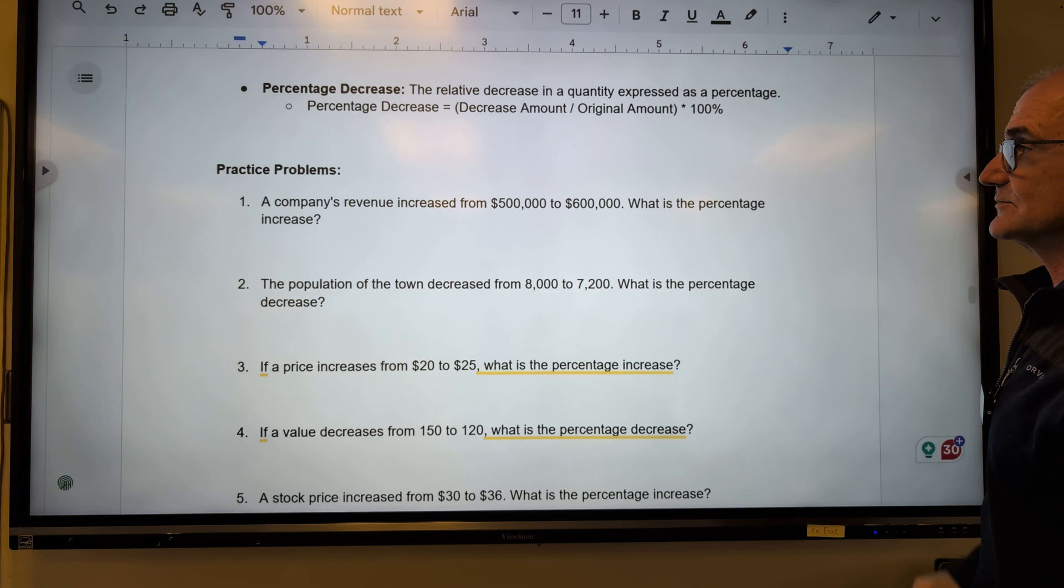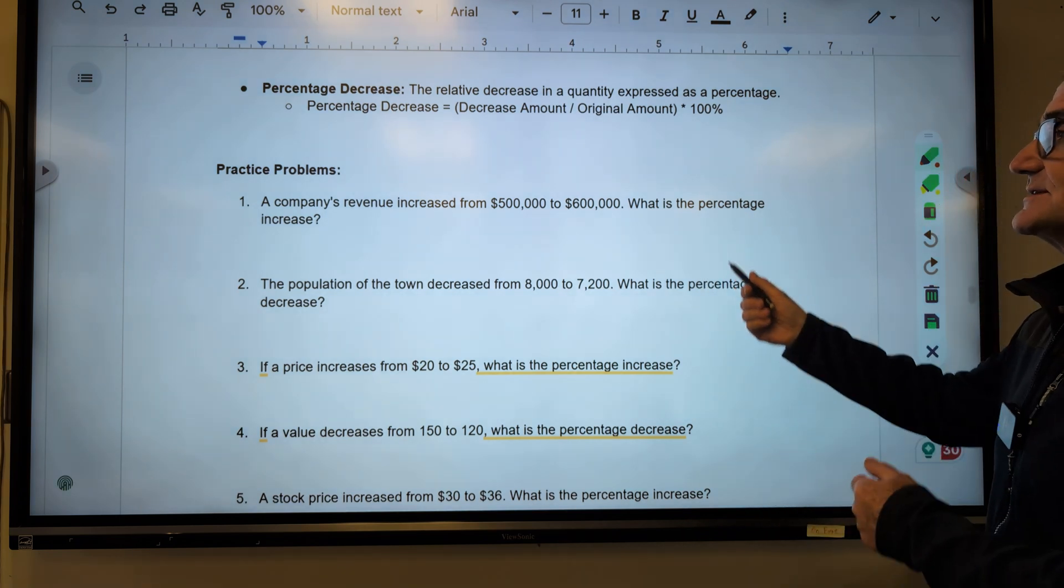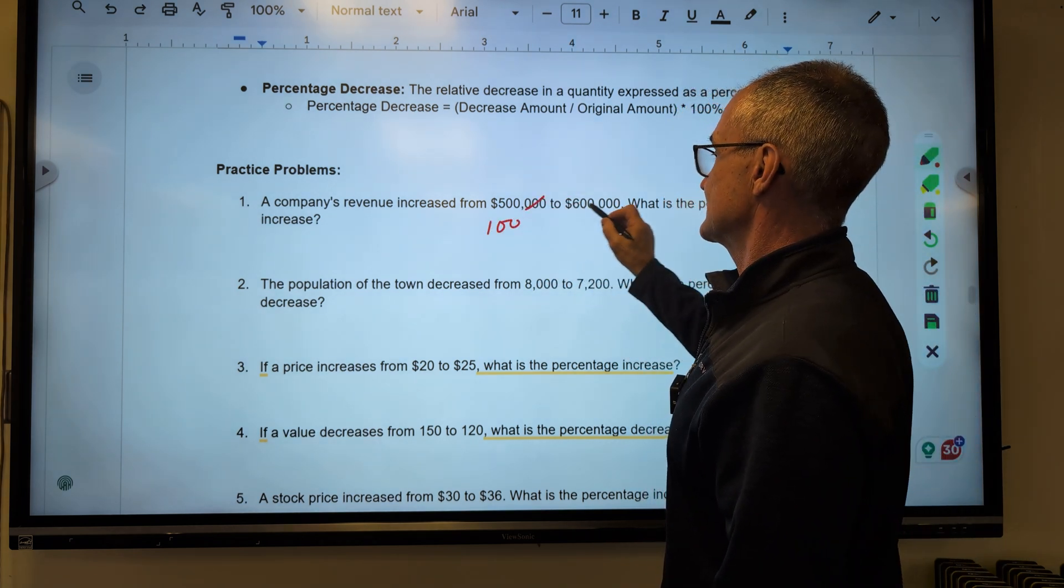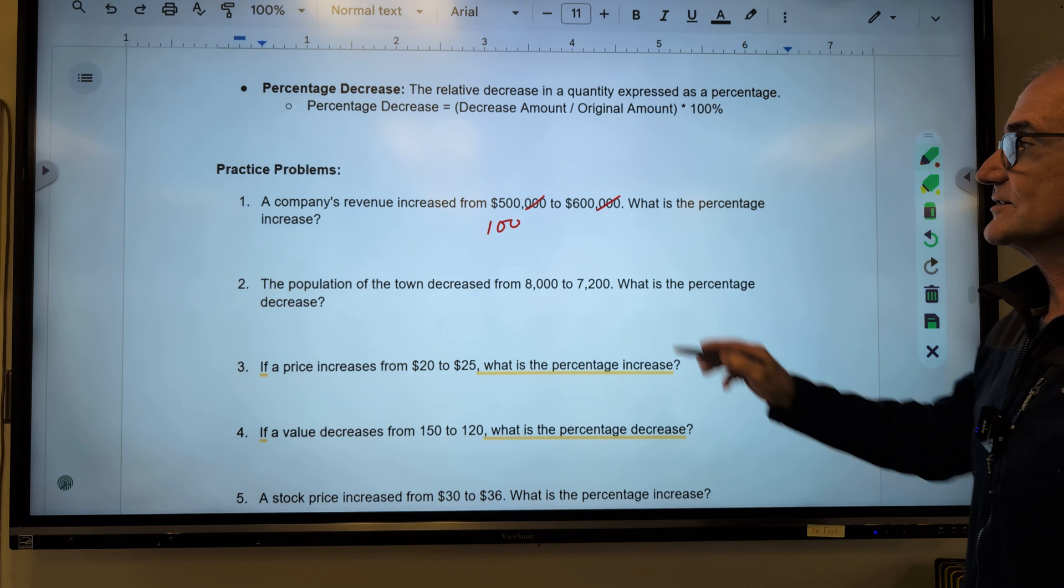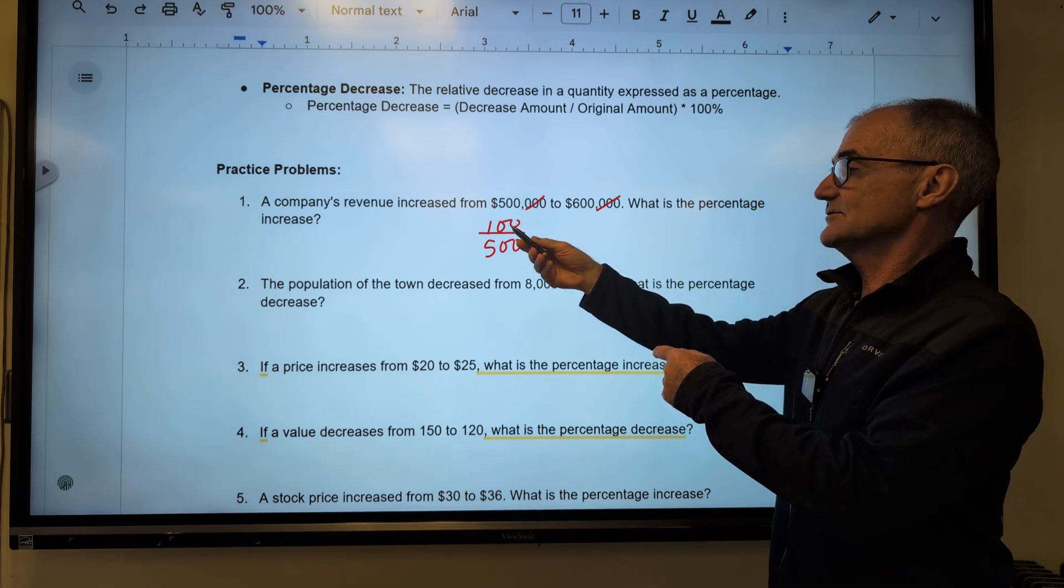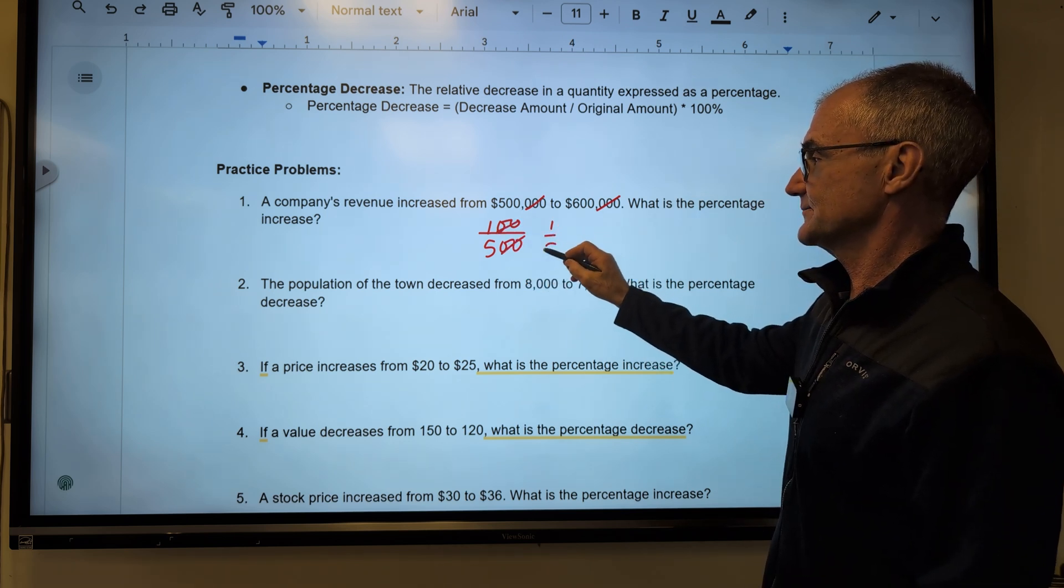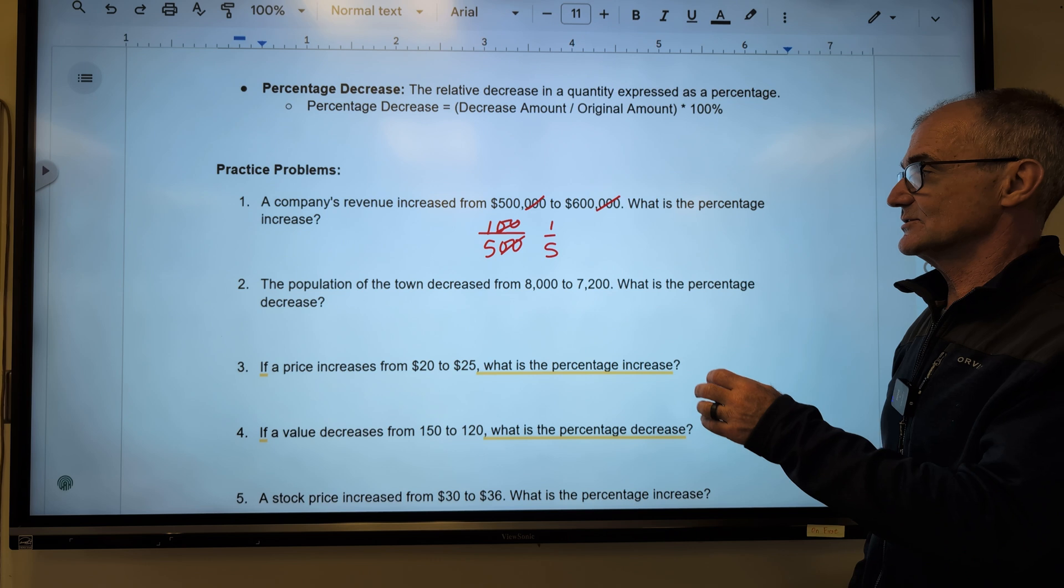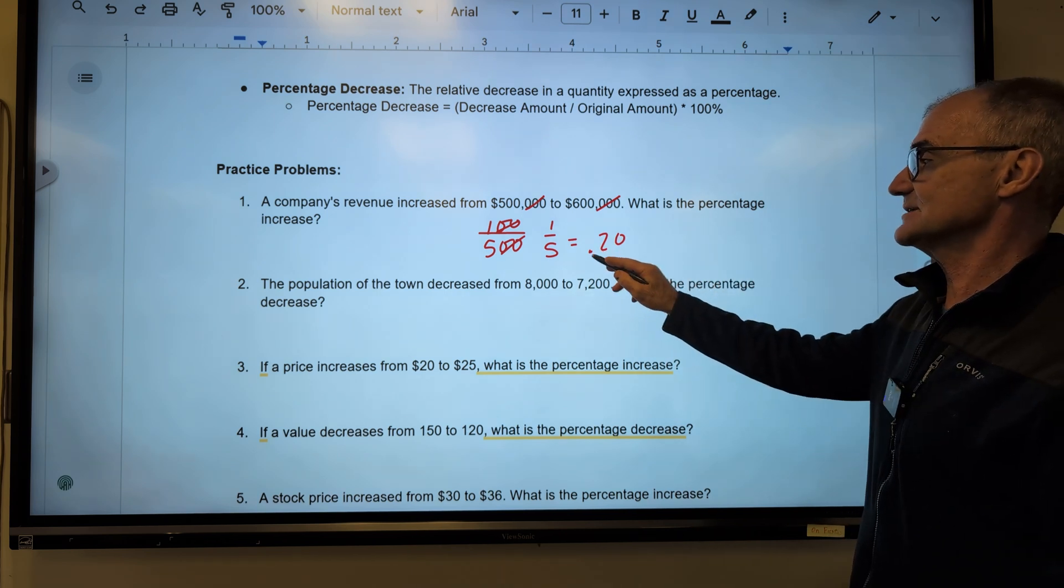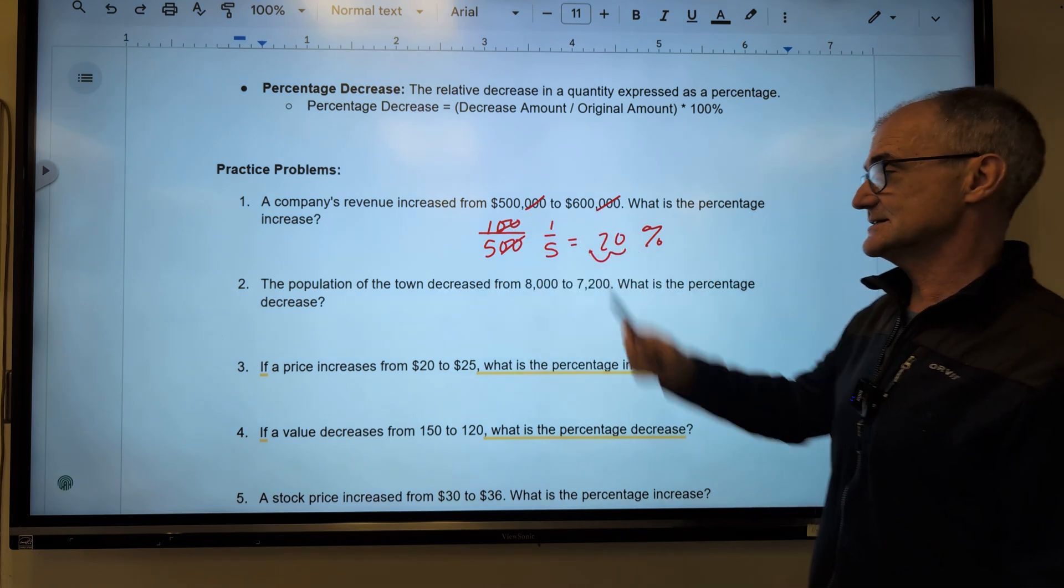A company's revenue increased from 500,000 to 600,000. How much did it increase? What is the percent increase? So we're going to look at the amount it increased. So it went from 100, and actually I could just drop all these zeros to compute a little faster, over the original amount, 500. So 100 to 600 is 100. 100 over 500, what is the percent increase? So this is going to reduce down to one-fifth. I could convert that to a decimal. Five times 20 equals 100. So this is equal to 0.2. Then I multiply by 100% to get 20%. So it is a 20% increase to go from 500,000 to 600,000.